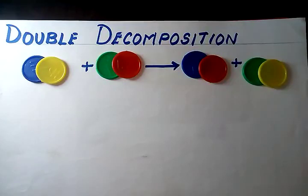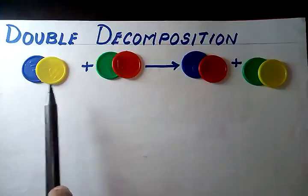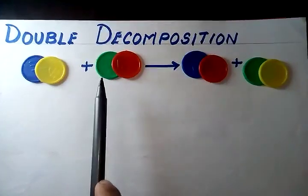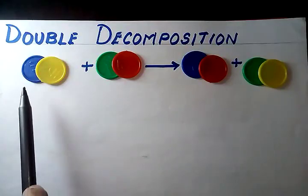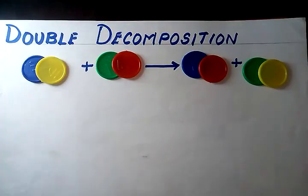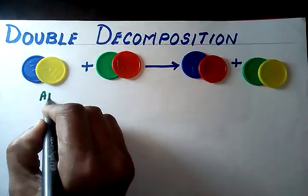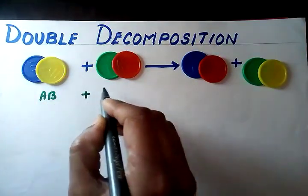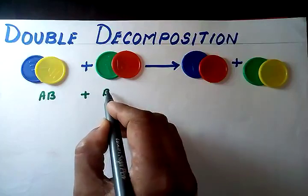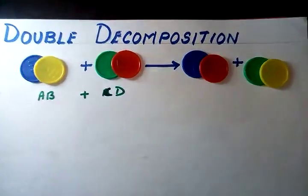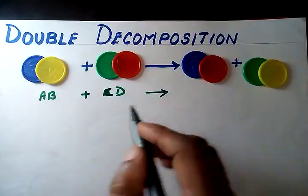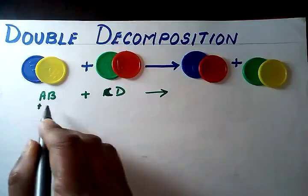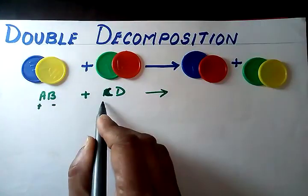Double decomposition reaction. In this reaction we have two reactants forming two products. Carefully observe: AB combines with CD. This is a cation, this is an anion. Here also, this is a cation and this is an anion.